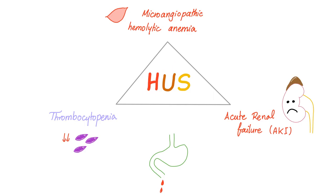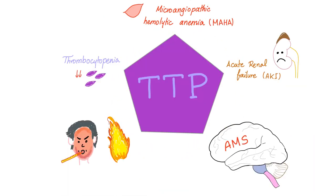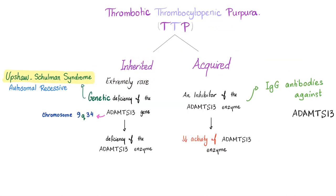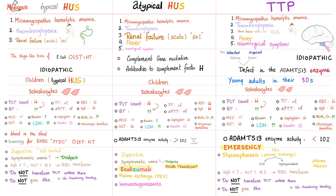Typical HUS: microangiopathic hemolytic anemia, thrombocytopenia, acute renal failure — don't forget the bloody diarrhea from O157:H7. TTP is a pentad: microangiopathic hemolytic anemia, thrombocytopenia, acute renal failure, fever, and altered mental status. The etiology of typical HUS is the Shiga-like toxin of E. coli O157:H7 — also called enterohemorrhagic E. coli (EHEC) or Shiga toxin-producing E. coli (STEC). Atypical HUS: complement gene mutation or antibodies to complement factor H. TTP: defect in ADAMTS13, either a deficiency or an inhibitor. Typical patients: typical HUS and atypical HUS occur in children; TTP typically affects young adults in their 30s.